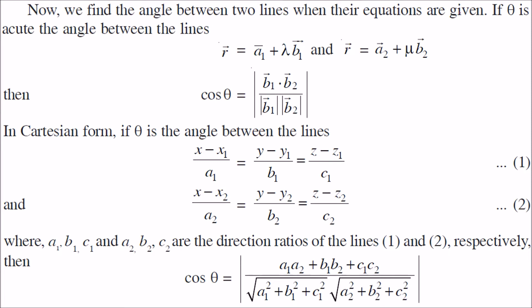Let us find the angle between two lines with equations. We have line r equals a1 plus lambda b1, and r equals a2 plus mu b2; these are in vector form. What will be cos theta? This will be b1 dot b2 divided by the magnitude of b1 times magnitude of b2.